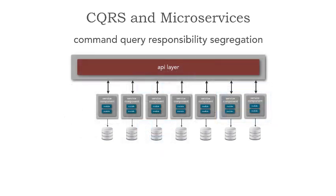Let's see how we can apply CQRS to microservices. On the far left-hand side we have a customer demographics service. What is the model in that microservice optimized for — reads or writes? We actually need two models within this microservice: one to update entities, and one to return an aggregation. But more importantly, what's that database optimized for? Neither reads nor writes.